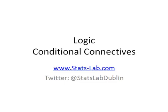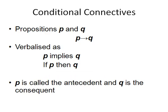In this presentation we are going to look at conditional connectives. The first thing we are going to look at is implication. We have two propositions P and Q, and we have this arrow that goes from left to right. So P implies Q. We verbalize it as 'P implies Q' or 'if P then Q'.